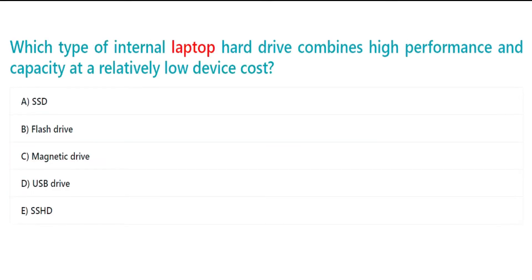Which type of internal laptop hard drive combines high performance and capacity at a relatively low device cost? A. SSD. B. Flash drive. C. Magnetic drive. D. USB drive. E. SSHD.